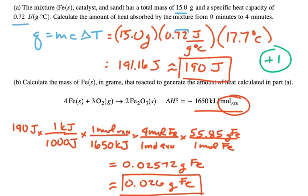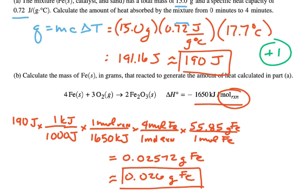Starting with 190 joules from before, I'll convert joules to kilojoules to moles of reaction. Then, for every mole of reaction, I get 4 moles of iron, and 1 mole of iron is 55.85 grams. This gives 0.02572 grams of iron.